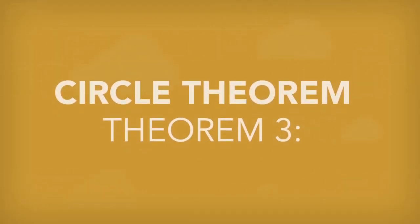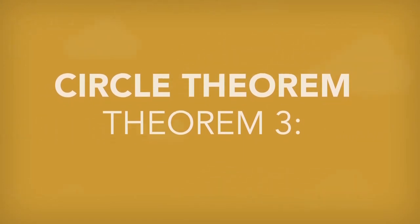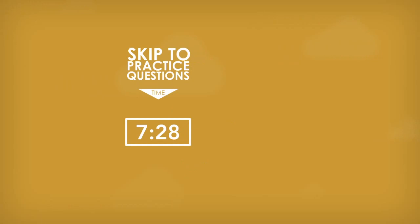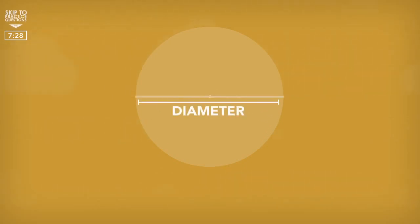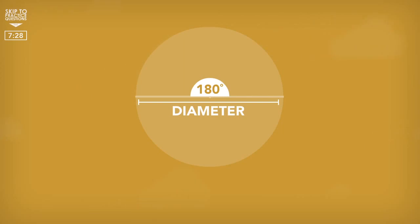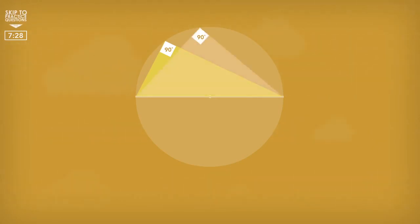Circle Theorems. Theorem 3. If two radii lines are connected to each other and form a straight line, this line is the diameter of the circle. We know from the rules of straight lines that angles on a straight line add up to 180 degrees. So it's safe to say the angle of the diameter, or the angle at the center of the circle, is 180 degrees. If these two lines were linked to a point on the circumference, the angle at the circumference would be equal to 90 degrees, regardless of where this point is on the circumference.